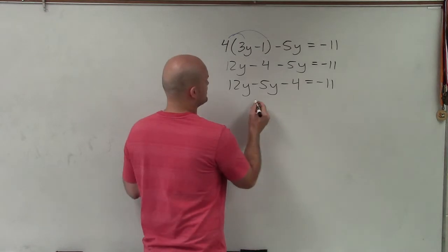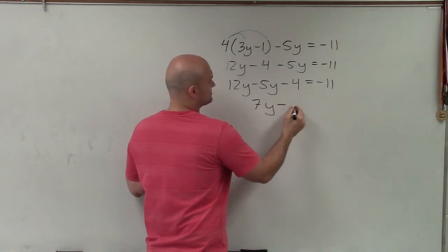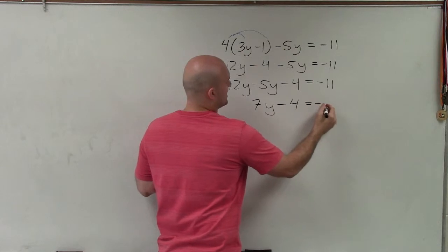Well, 12y minus 5y is going to be 7y minus 4 equals negative 11.